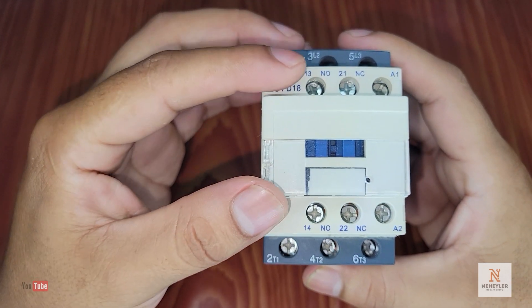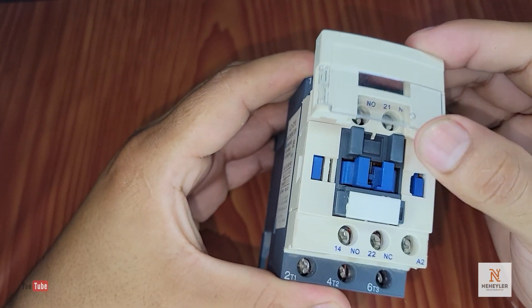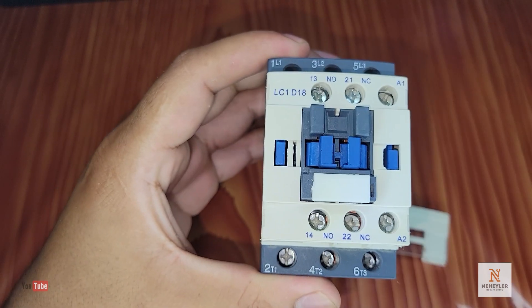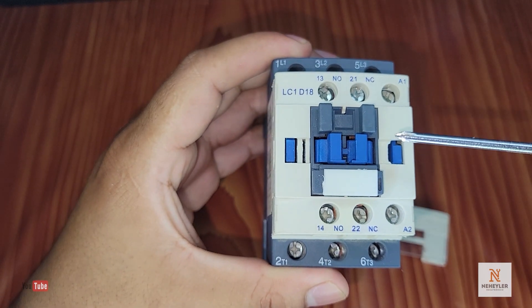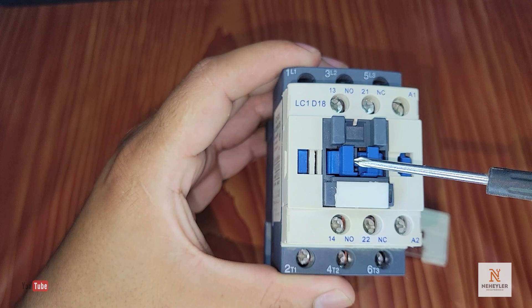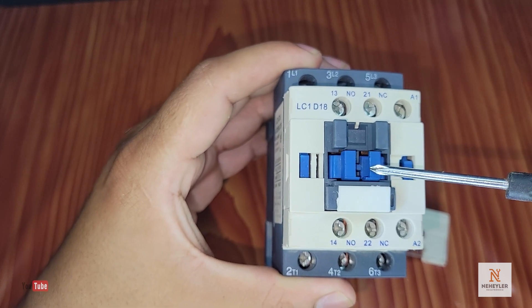Some contactors come with a cover, which must be removed to place the timer block. You must ensure that the timer latch engages this moving part, which will allow it to be pulled when energizing the contactor coil.